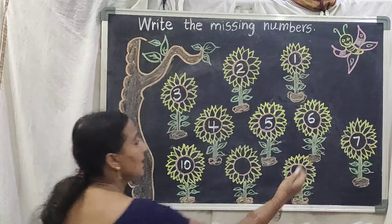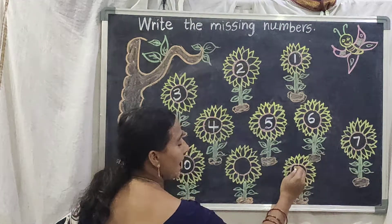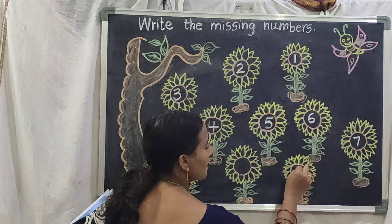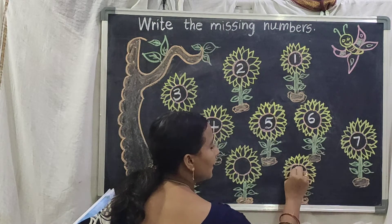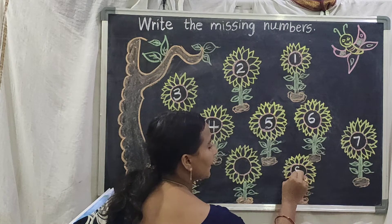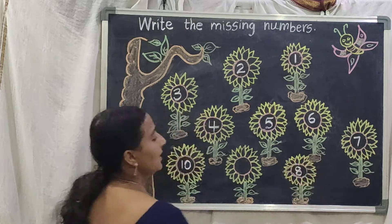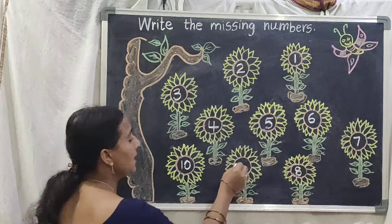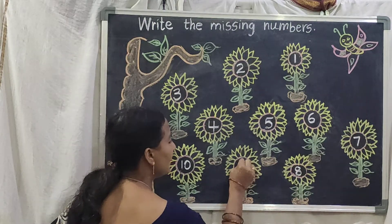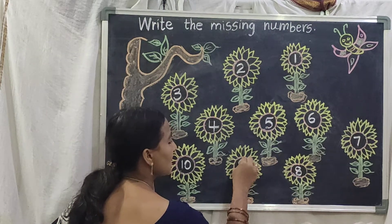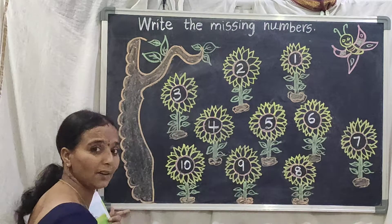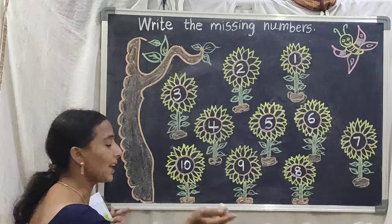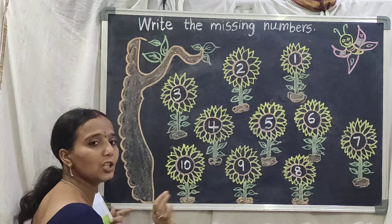7 after — come this side, next flower. Write the number 8. 8 after 9 — write the 9 here, children. 9 after which number will come? 10. Already they have given 10, so don't write.